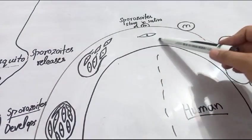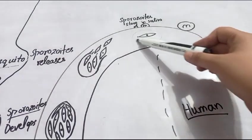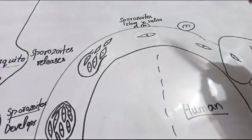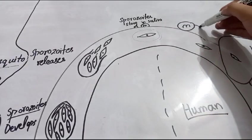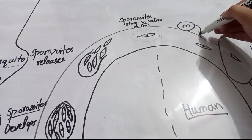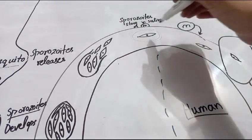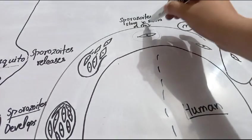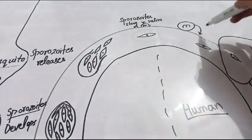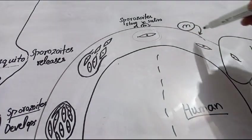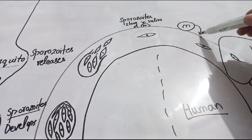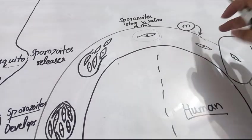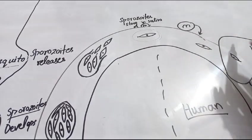These sporozoites will enter into the saliva of that mosquito. Now with the sporozoites in its saliva, this infected mosquito bites a healthy person. So whenever this infected mosquito bites, it injects sporozoites into the human body.